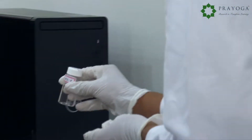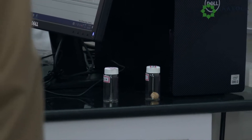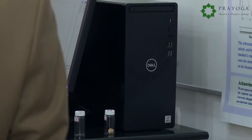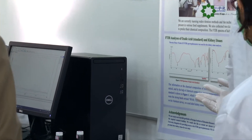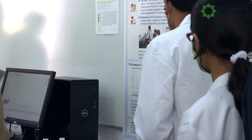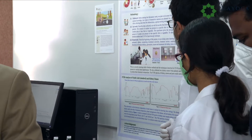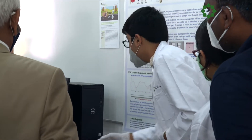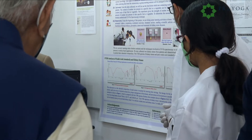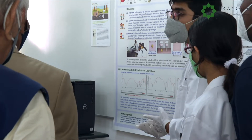These two kidney stones, along with our standard of pure oxalic acid, were sent for FTIR analysis. These are the three spectra that we obtained. From literature review, we concluded that kidney stone one is made of calcium oxalate, and kidney stone two is made up of calcium oxalate and uric acid.